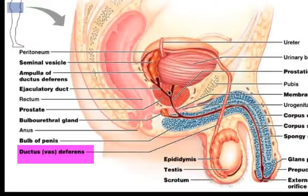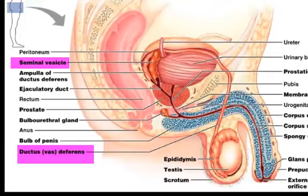There are a couple of glands involved. First is the seminal vesicle, located right behind the urinary bladder. It secretes what's known as seminal fluid — a yellowish, viscous, alkaline fluid containing fructose (a sugar), ascorbic acid, and prostaglandins. The prostaglandins act like hormones that cause relaxation of smooth muscle.